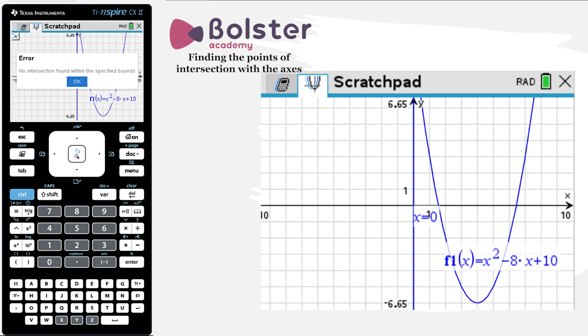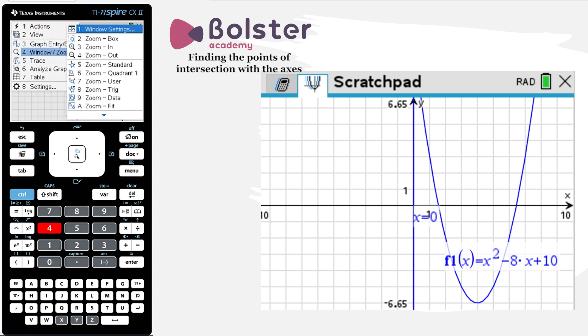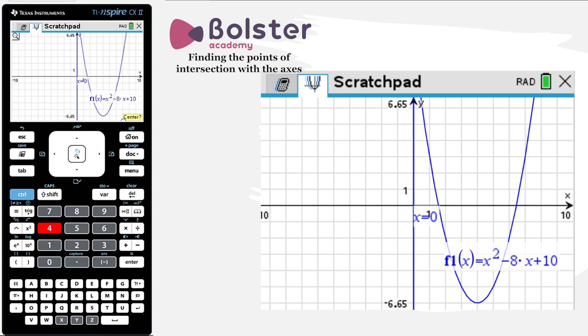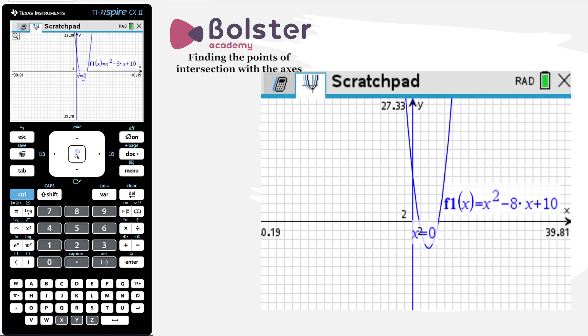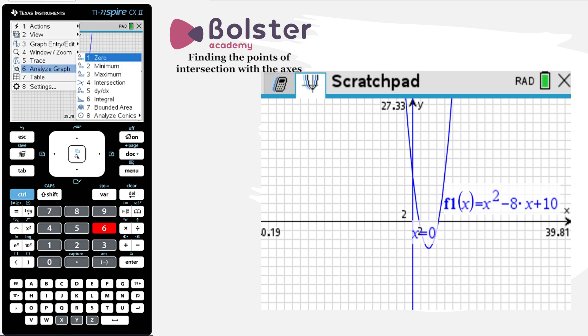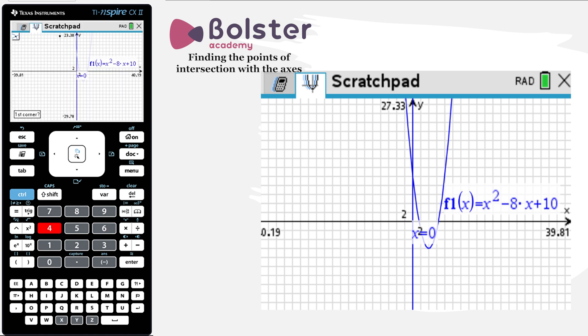So how do we resolve this? Well, what we need to do is actually change our view. So we go into menu, window zoom, and we just zoom out option number four. I zoom out once or twice. And here now I can clearly see the graph is crossing the y-axis. So if I go again into analyze graph intersection and I choose my bounds appropriately, I get my intersection point at 0, 10.